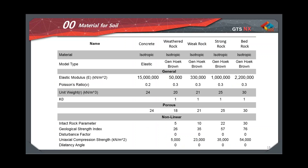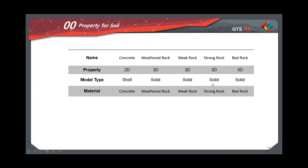The materials include concrete for the shotcrete tunnel lining and four progressively stronger rock layers. Generalized Hoek-Brown parameters are defined for the rock layers. The concrete will be assigned as a 2D shell element representing the tunnel wall, while all rock layers will be assigned as 3D solid elements.